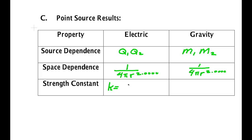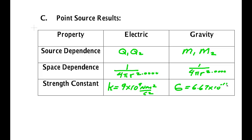The strength constants: for the electric force, k equals nine times ten to the ninth newton meter squared per coulomb squared. For gravity, the universal gravitational constant G equals six point six seven times ten to the minus eleven newton meter squared per kilogram squared.